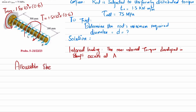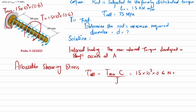Now move toward the allowable shearing stress. The allowable shearing stress formula is τ = Tc/J, where the maximum torque T is 1.5 × 10³ × 0.6 newton-meters. c is not yet known; c equals d/2 since we want to find the diameter. J is pi over 32 times d to the power 4, which is the polar moment of inertia formula for a solid cylindrical body.